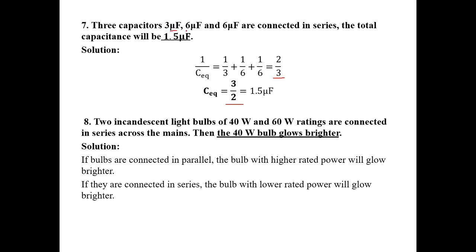Problem: Two incandescent bulbs — 40 watts and 60 watts — are connected in series across the mains. Which glows brighter? In a parallel connection (like house wiring), the higher-wattage bulb glows brighter. But in a series connection, it is the opposite — the lower-rated power bulb glows brighter. So the 40-watt bulb glows brighter.